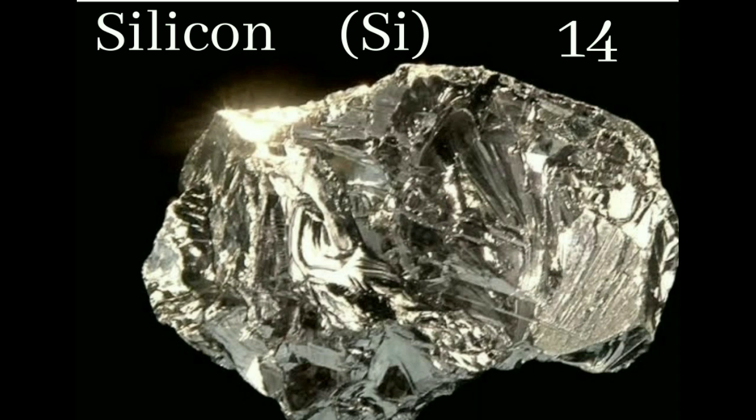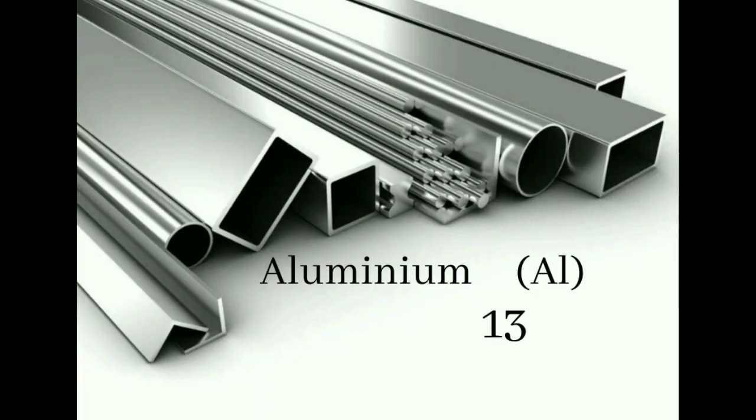Our second element is silicon with atomic number 14, has contributed 28.2% to the known universe. Third one is aluminium with atomic number 13 and it is present just 8.23% in the known universe.